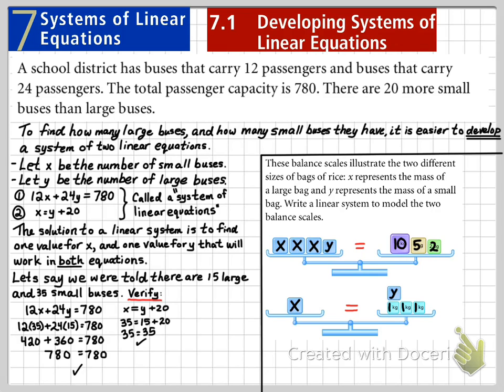To write a linear system to model these two balance scales, we could say in the first equation, 3X plus 1Y equals 17. In the second equation, we could say X is equal to Y plus 3. There's my system of linear equations.